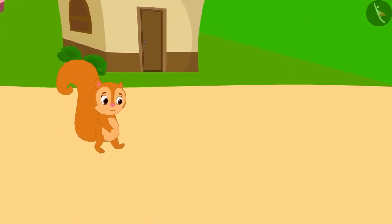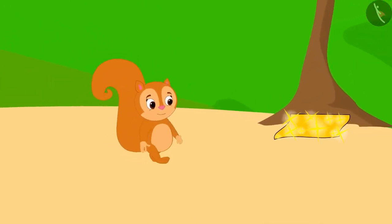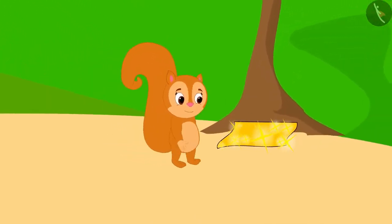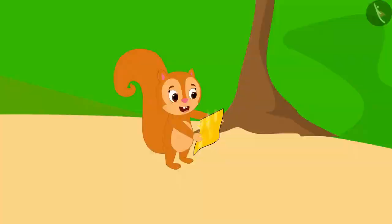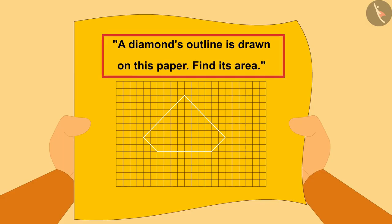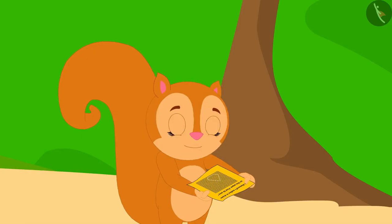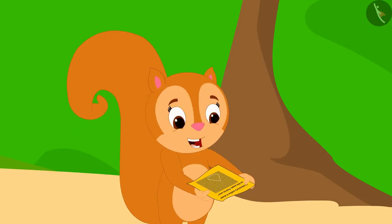Chanda was returning home from her shop. Just then, she saw a shiny paper under a tree. A diamond's outline is drawn on this paper — find its area. Chanda read the instructions written on the paper and got excited.